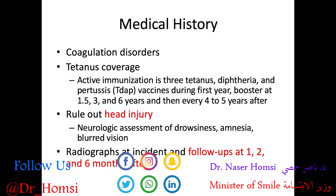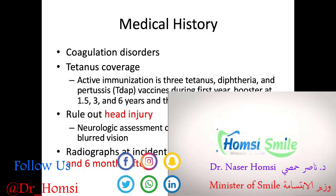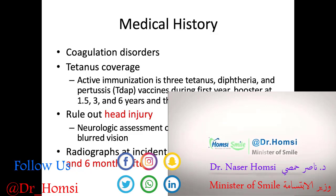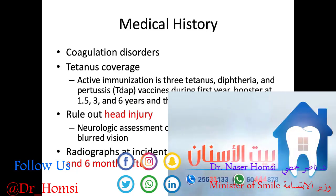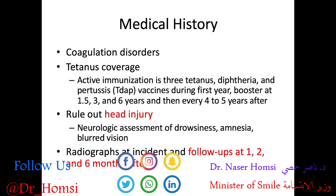We importantly want to rule out a head injury. If they've had trauma, there's a good chance they hit their head to some degree. We perform a neurologic assessment of drowsiness, amnesia, and blurred vision — asking how many fingers am I holding up, checking their speech, looking for ptosis or drooping of the eyelids, dizziness, nausea, vomiting, and amnesia. If they have any of these signs, tell them their teeth are minor and send them to the ER to get tested for a head injury, which can be much more serious.